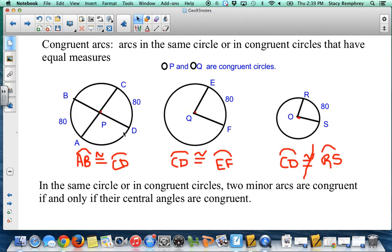Okay, congruent arcs are arcs in the same circle or in congruent circles that have equal measures. So in this one, you can see AB, arc AB is 80 degrees, and CD is 80 degrees. Since these are in the same circle, I can say these two arcs are congruent.